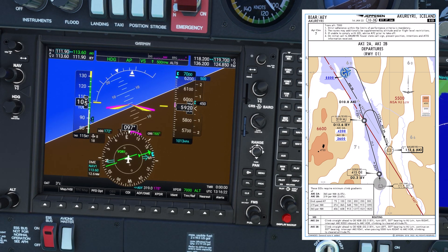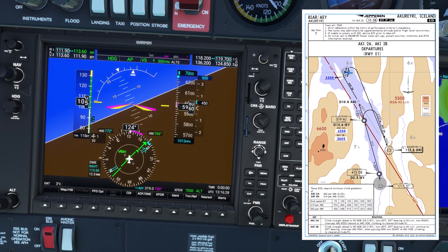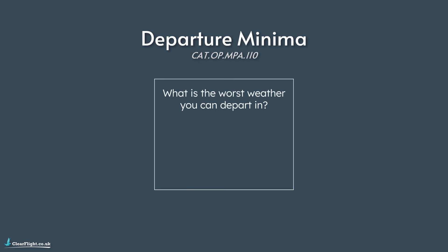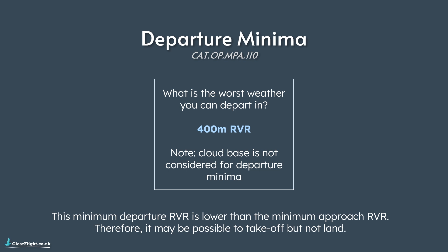Although flying departures might be relatively straightforward, it's crucial that you understand the rules and regulations surrounding IFR departures, particularly the weather minima and departure alternate requirements. The first question: what is the worst weather you can depart in with an EASA or UK single pilot instrument rating? The answer is a 400m RVR. It's worth noting that cloudbase is not considered for departure, so it could be overcast at 100 feet, but as long as the RVR is at least 400 metres and the airport has runway lighting, you can still depart IFR. However, this 400m minimum departure RVR is lower than the minimum RVR for an instrument approach, so it may be possible to take off but not be able to land — which leads us into departure alternates.